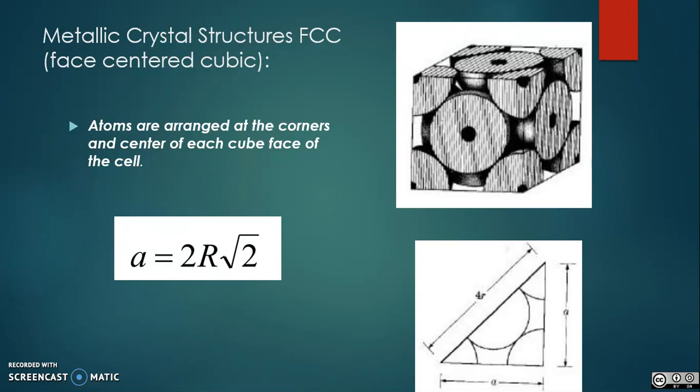The FCC unit cell consists of a net total of four atoms, eight from the corner atoms and six halves from the face atoms, as shown in the middle image above. The image below highlights a unit cell in a larger section of the lattice.